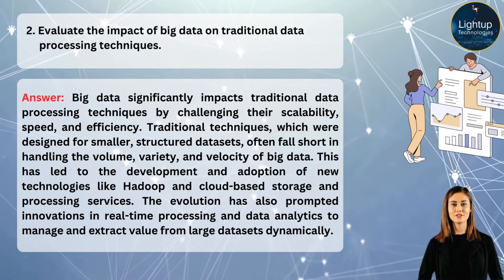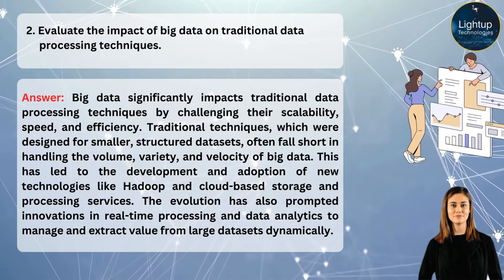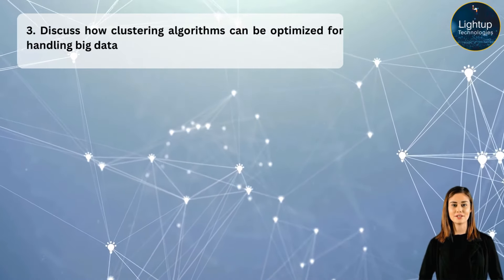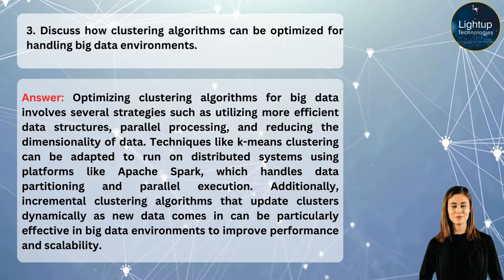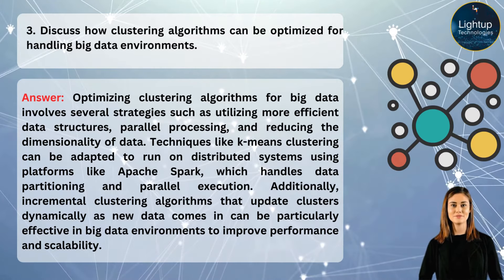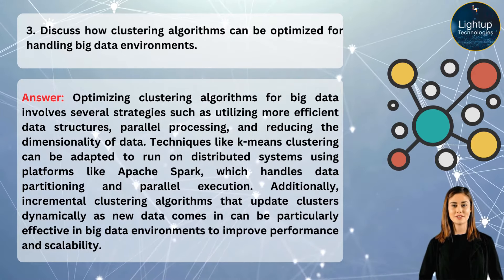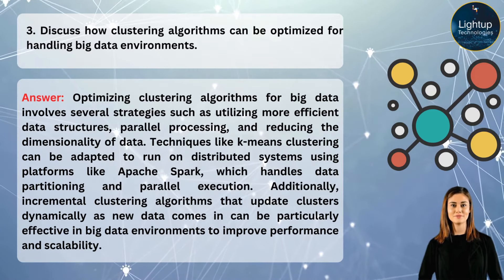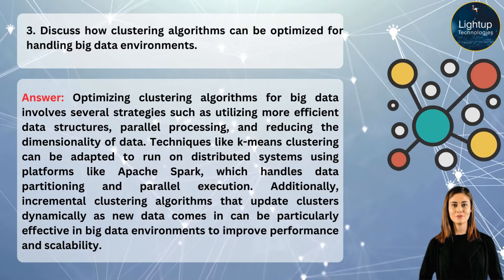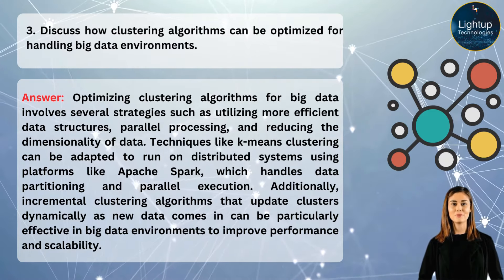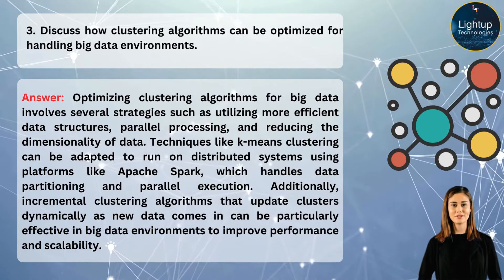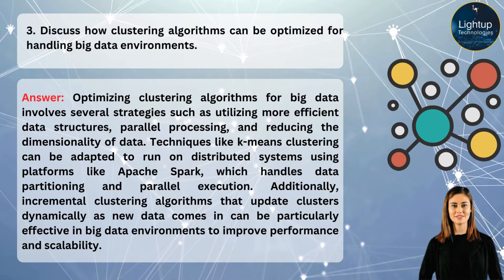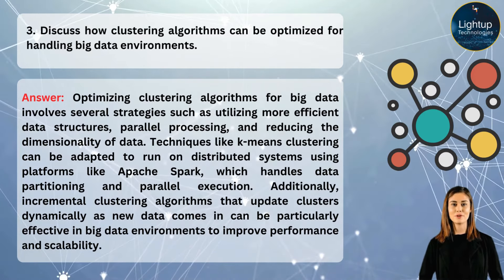The evolution has also prompted innovations in real-time processing and data analytics to manage and extract value from large datasets dynamically. Optimizing clustering algorithms for big data involves several strategies such as utilizing more efficient data structures, parallel processing, and reducing the dimensionality of data. Techniques like k-means clustering can be adapted to run on distributed systems using platforms like Apache Spark, which handles data partitioning and parallel execution.